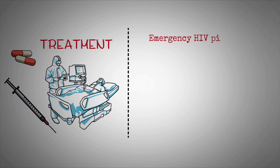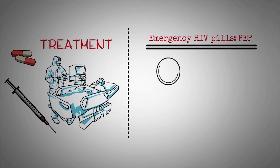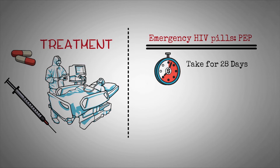The first HIV treatment option is emergency HIV pills. Anyone who may have been exposed to the virus within the last 72 hours should speak with a healthcare provider about post-exposure prophylaxis (PEP). This medication may be able to stop the infection, especially if taken as soon as possible after potential exposure. A person takes PEP for 28 days, and a doctor monitors the person for HIV afterward. PEP is not 100% effective, so it is important to also use prevention techniques such as barrier protection and safe injection practices.